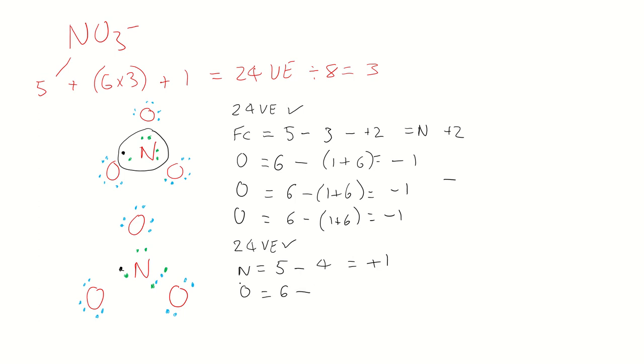This oxygen here is six minus, we have the two bonds there, so let's put them in brackets, plus the four dots. So this time it has a formal charge of zero. The other two are the same. The other two oxygens are going to have a formal charge of minus one.